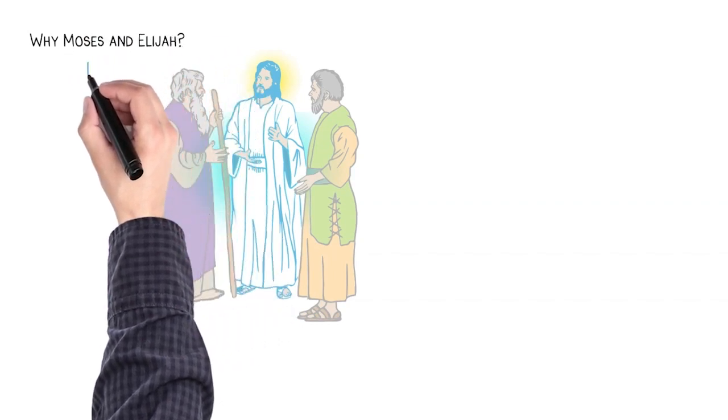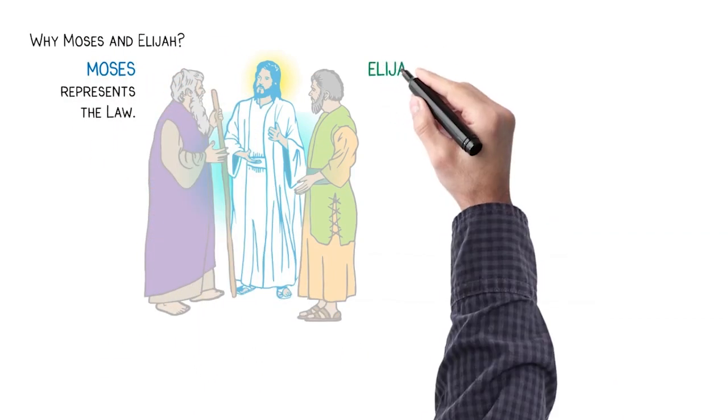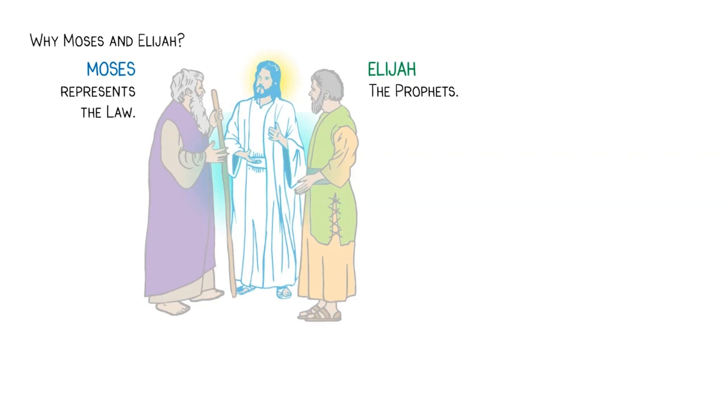Why Moses and Elijah? Well, Moses represents the law and Elijah the prophets, and there they are talking with Jesus.